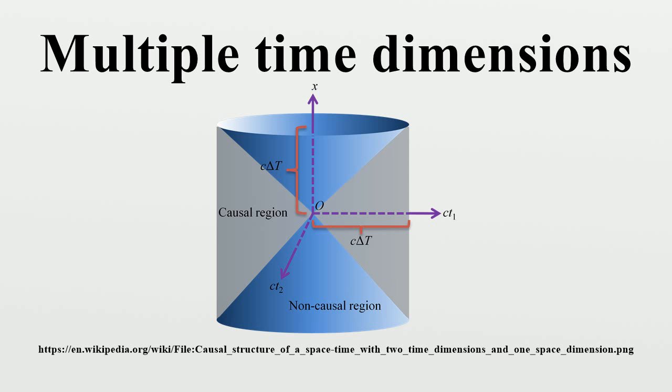Walter Craig and Steven Weinstein proved the existence of a well-posed initial value problem for the ultra-hyperbolic equation. This showed that initial data on a mixed hypersurface obeying a particular non-local constraint evolves deterministically in the remaining time dimension.